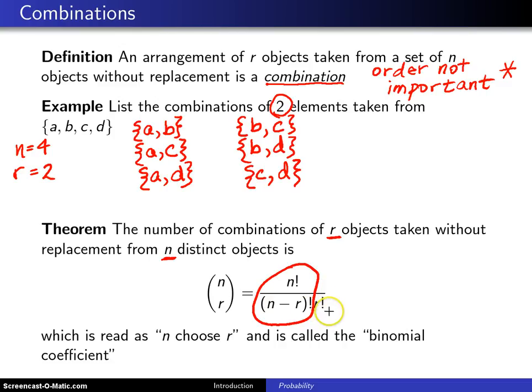And all we're doing here is dividing by r factorial. That basically is the proof. The r factorial is to account for the fact that we are not considering order here. This has a special name and it is known as the binomial coefficient. So we will use that formula as we do a few examples to illustrate this.